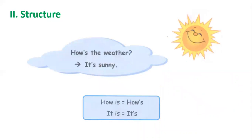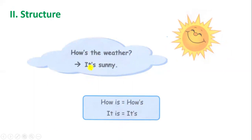Okay, next one is structure. Hôm nay chúng ta sẽ được học cấu trúc hỏi về thời tiết. Cách hỏi thời tiết là: how's the weather? Thời tiết như thế nào? Và cách trả lời sẽ là: it's [weather]. How's the weather? How's the weather? Trong câu how's the weather, how's là cách viết tắt của how is.